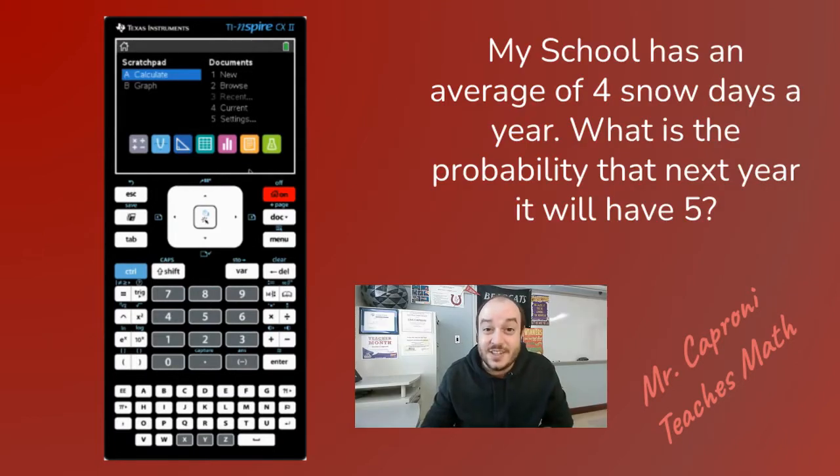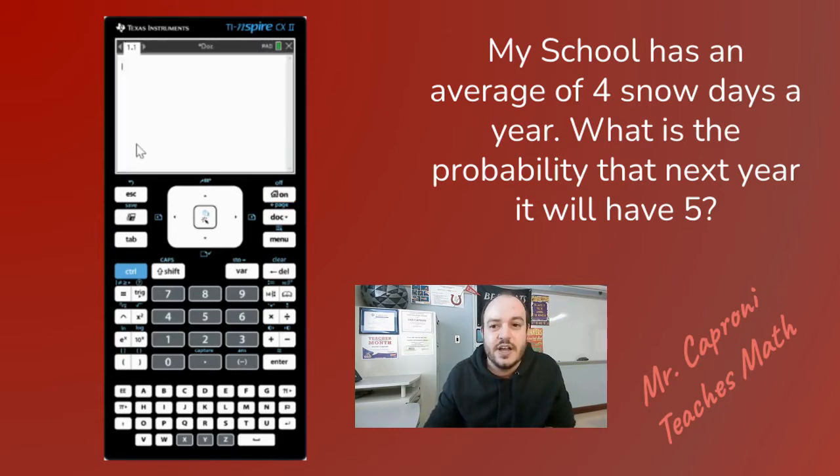First off, how do we actually get to the Poisson distribution function in our calculator? Well, if you're on the home screen like I am right now, then you can go ahead and either choose calculator in the scratch pad or you can open a new document, which I usually do for the actual calculator function of the TI Inspire. So we're going to open that new document and find the Poisson distribution in our menu.